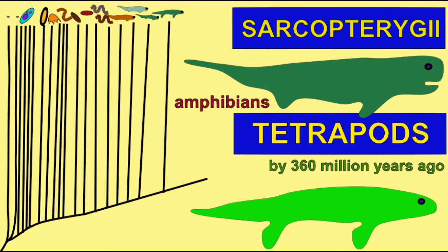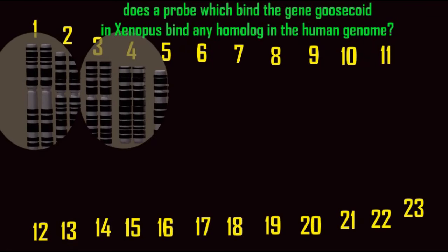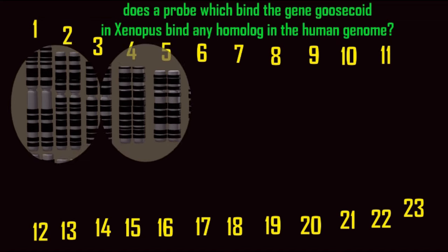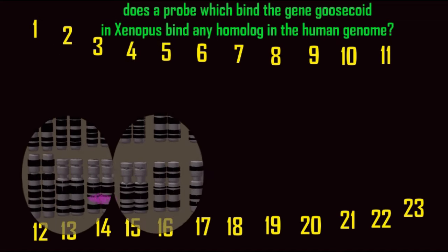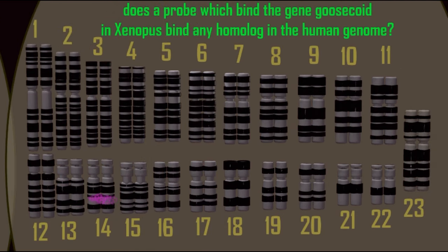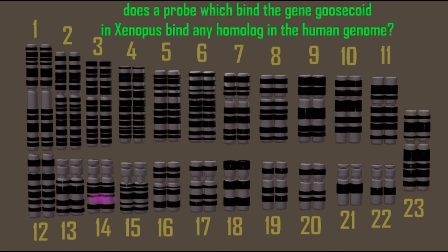Early animals must have possessed a bicoid-like gene, which was not only the ancestral gene that would later become bicoid in Drosophila, but also goosecoid in vertebrates. In humans, the homologue of the goosecoid discovered in Xenopus is located on the long arm of chromosome 14 in the region 14q32.